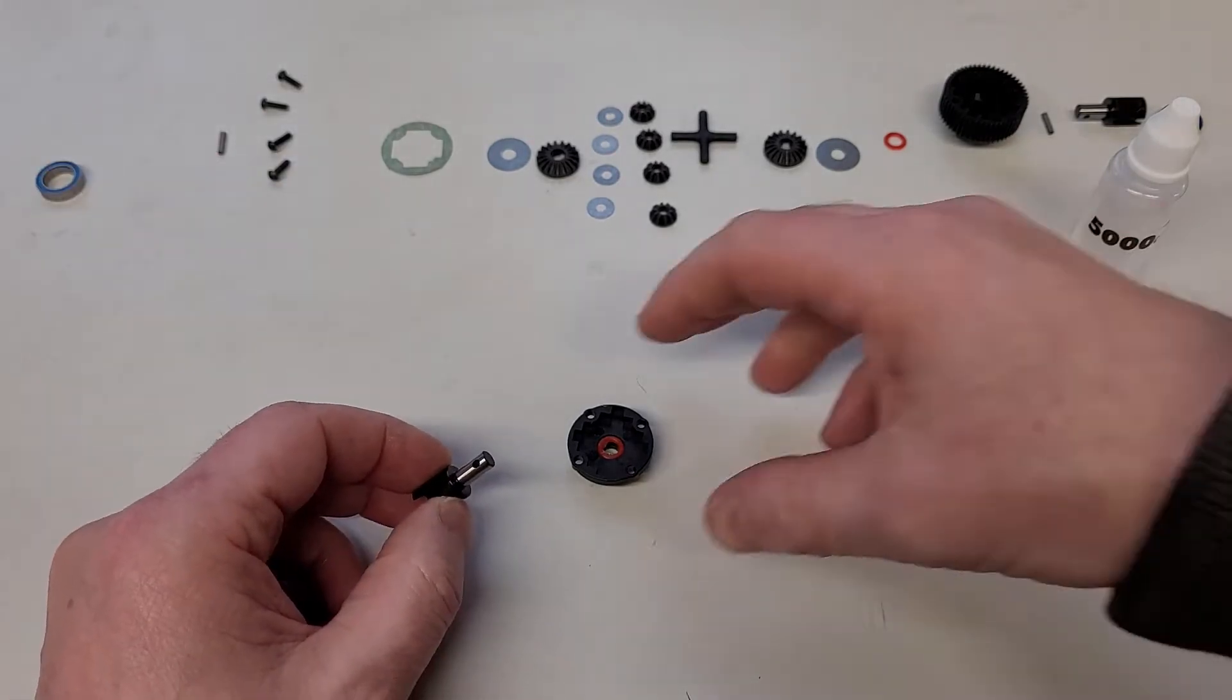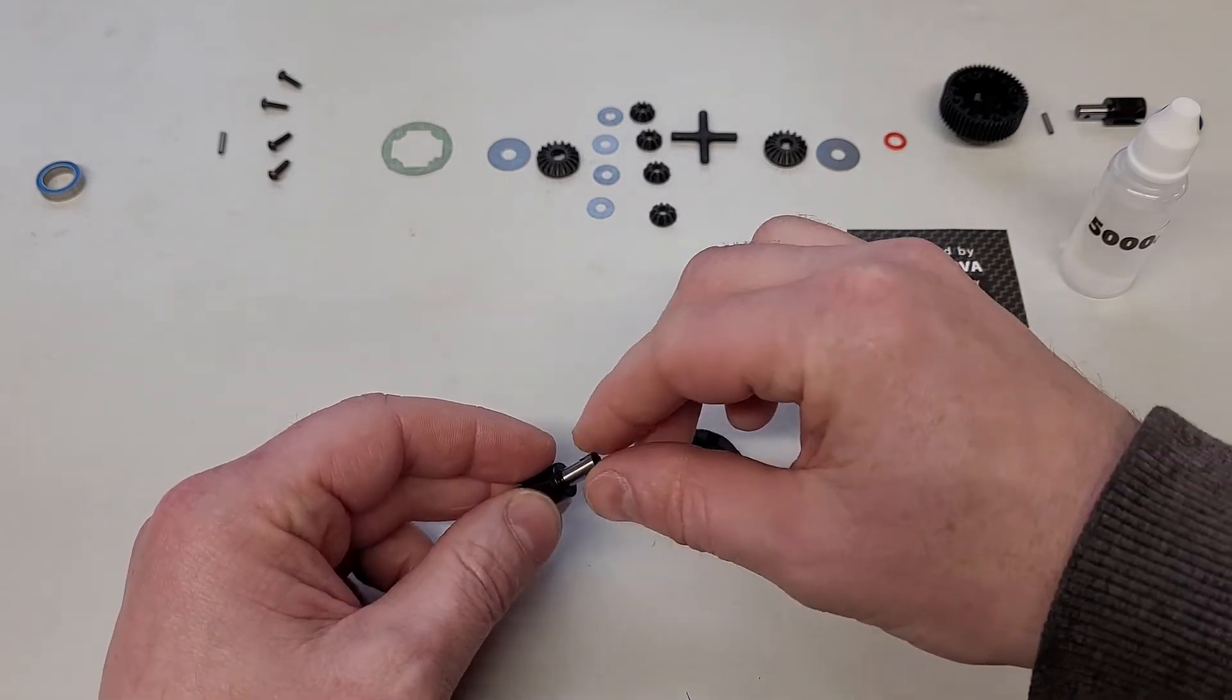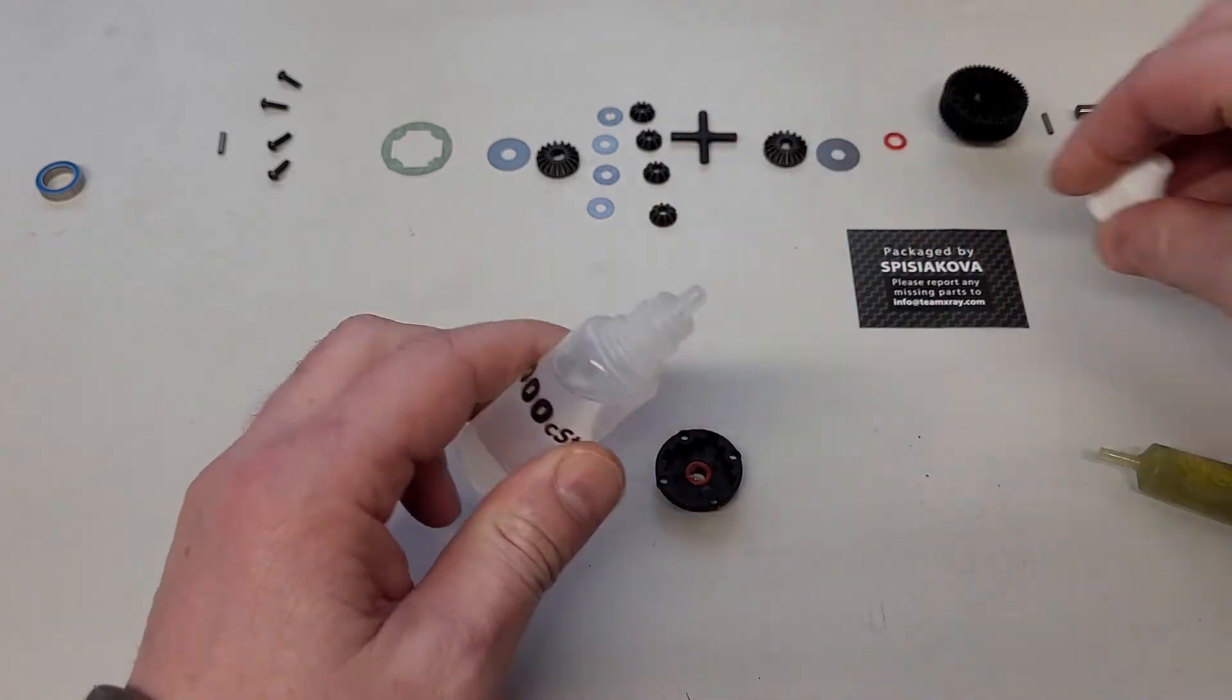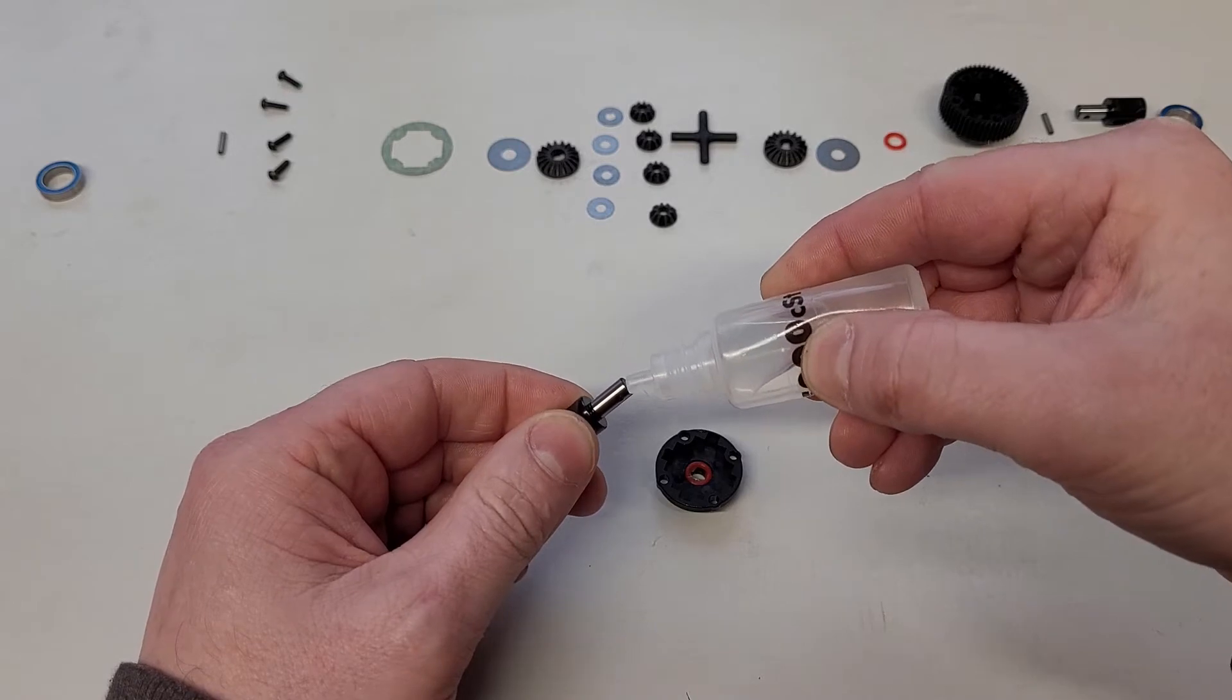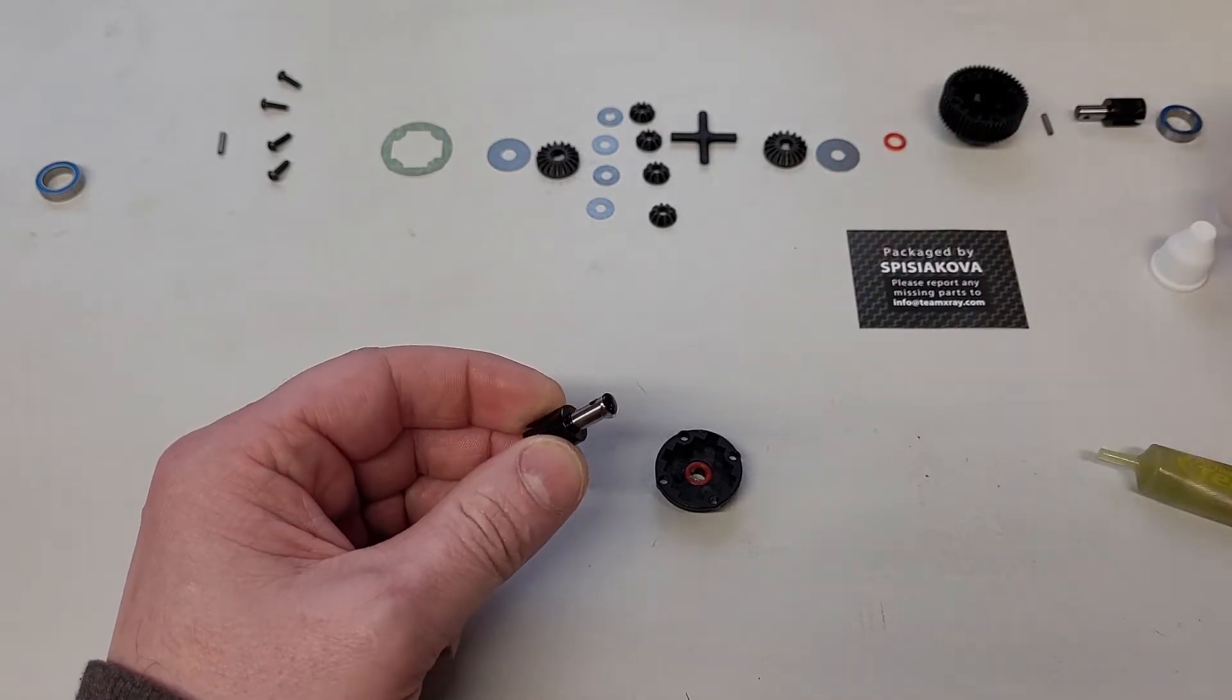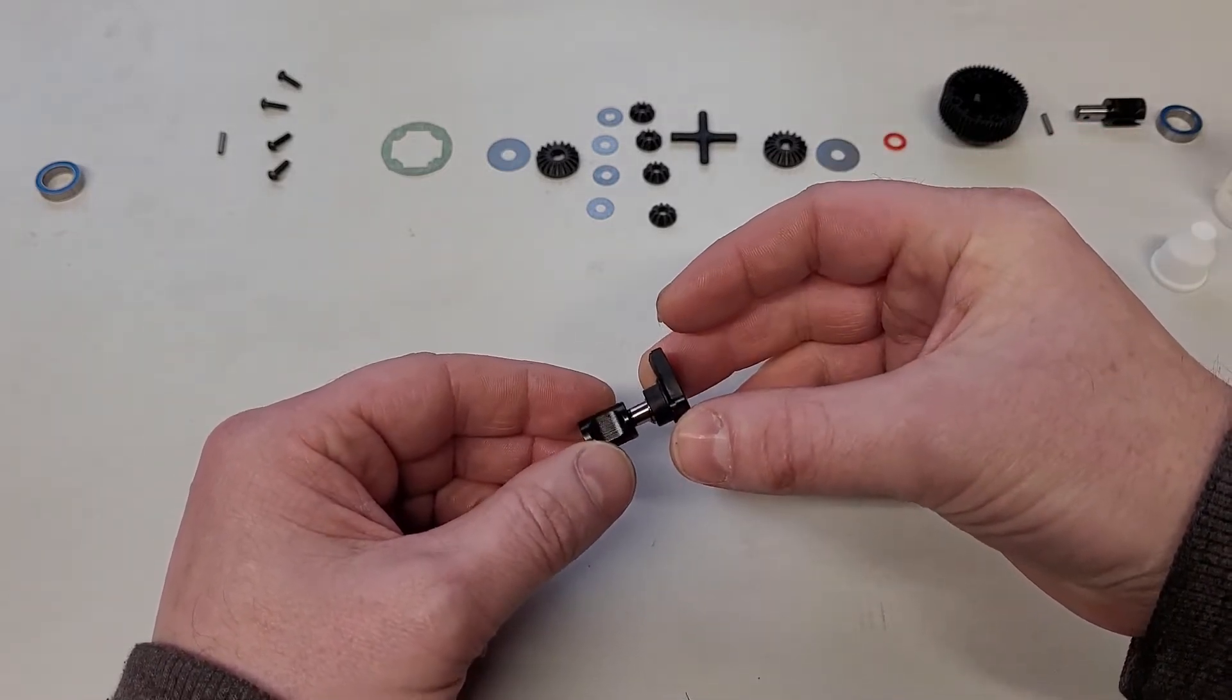The next task is you need to pass this shaft through there. To do that, they recommend putting a little bit of oil on it—we'll use the diff oil. It's important that you put some oil on here because otherwise you will scratch the o-ring we've just put in, and if you do that you'll always get a leaking diff. It's the same when you do your shock absorbers as well. So just pass that through there like that.